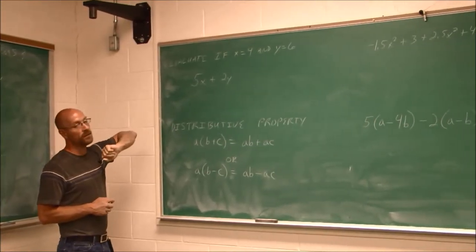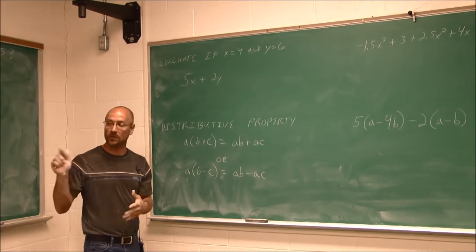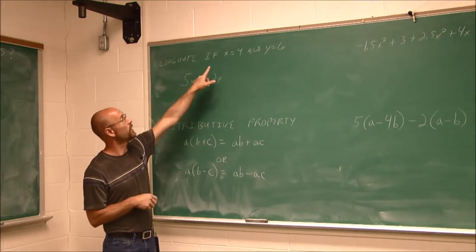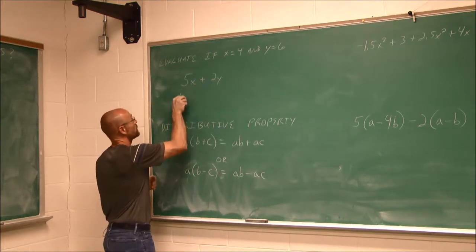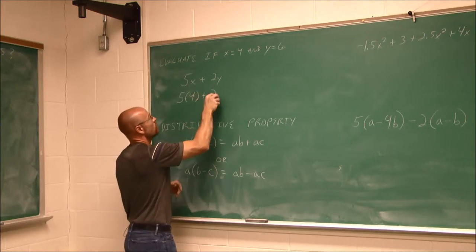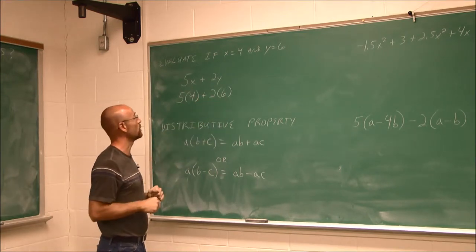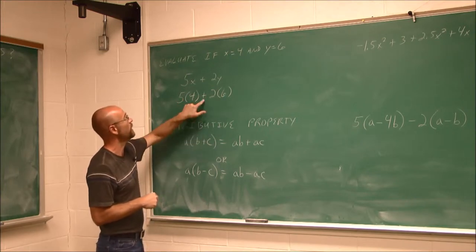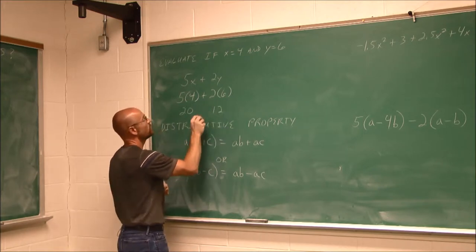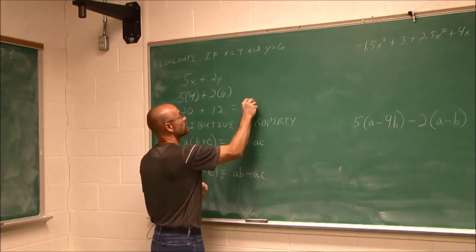Let's move on to actually evaluating an expression. When we evaluate expressions, we're given the values and we follow order of operations — that's why we touched on that at the beginning of the video. Evaluate if x equals 4 and y equals 6. This is what I call plug and chug. For the x, I'm going to put in the given x value using parentheses, and for the y, I'm going to put in the given y value. I see what operations I have — multiplication and addition. I do the multiplication first: 5 times 4 is 20, 2 times 6 is 12. Now that I've done the multiplication, I can do the addition: 20 and 12 is 32.